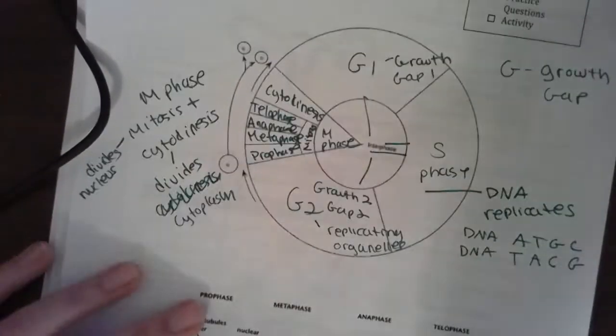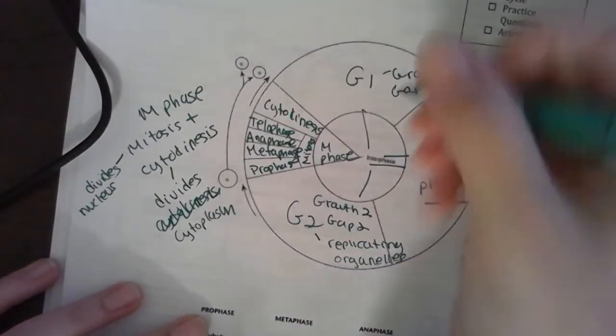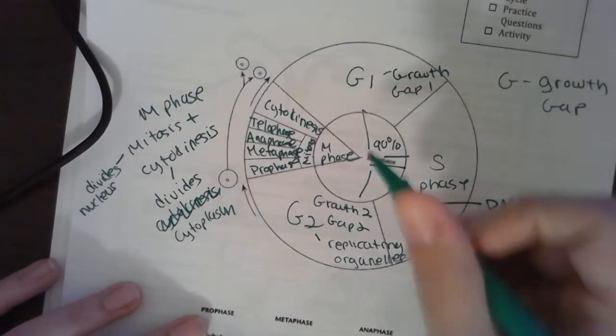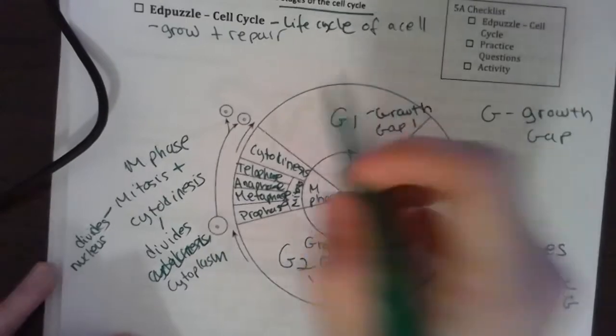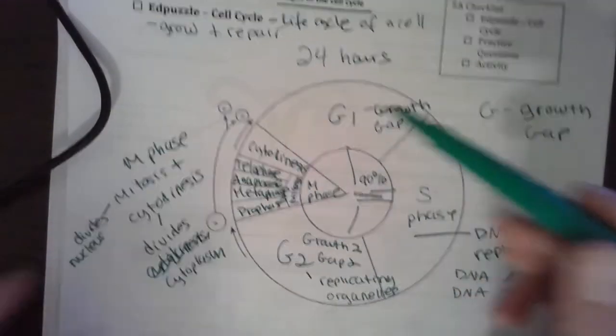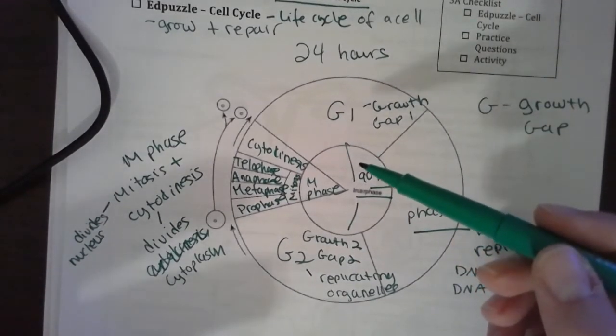We know about 90 percent of the time that a cell spends is in interphase. This whole cycle takes, give or take, about 24 hours. That means that like 23 out of the 24 hours the cell is in interphase, which is crazy.